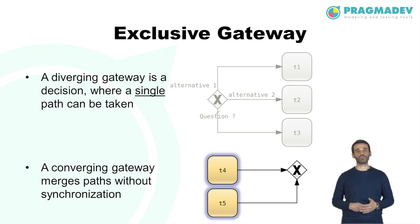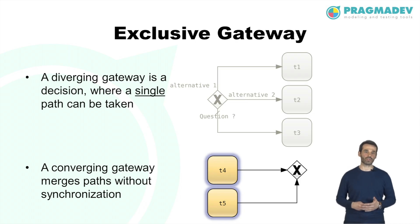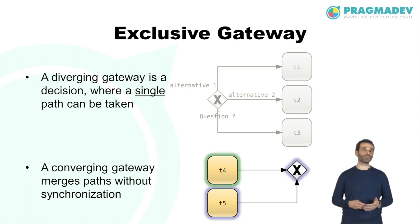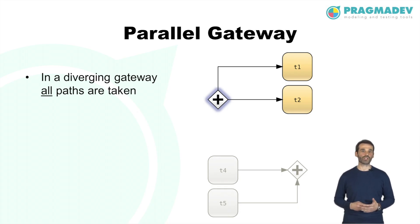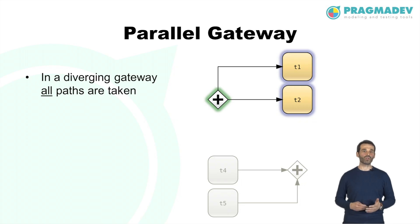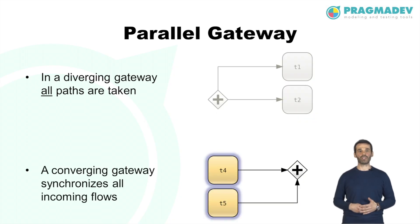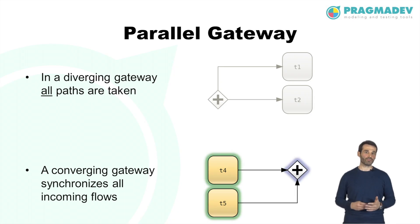A converging exclusive gateway merges alternative paths. Each incoming sequence flow is routed to the outgoing sequence flow without synchronization — for example, if the flow from T4 arrives first, the gateway triggers without waiting for T5. A parallel gateway creates and combines parallel flows. A diverging parallel gateway creates parallel paths without checking conditions, with each outgoing sequence flow taken upon execution. The converging parallel gateway waits for all incoming flows before triggering, synchronizing them unlike the exclusive gateway.